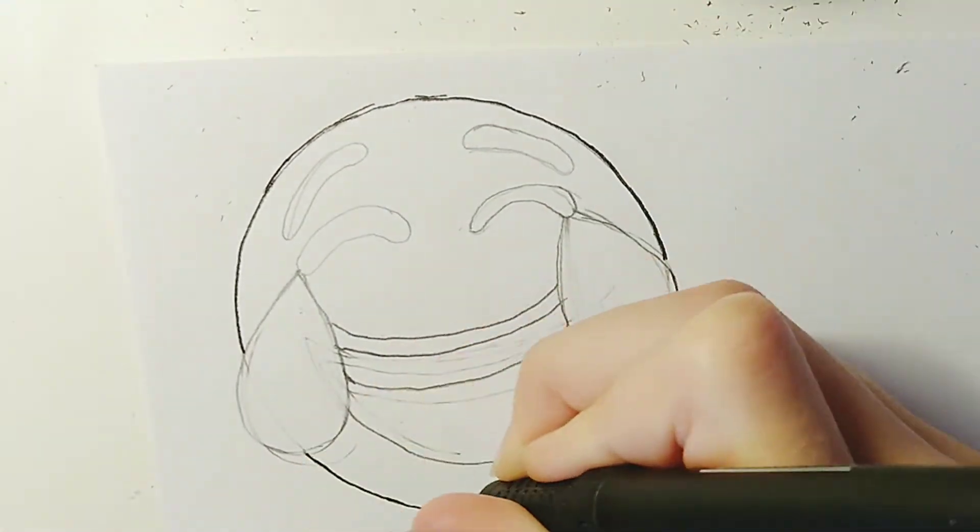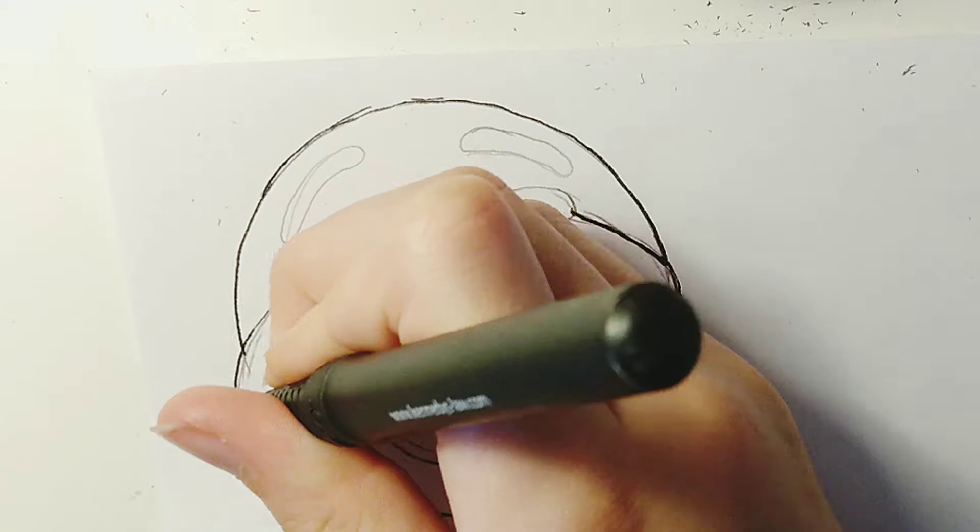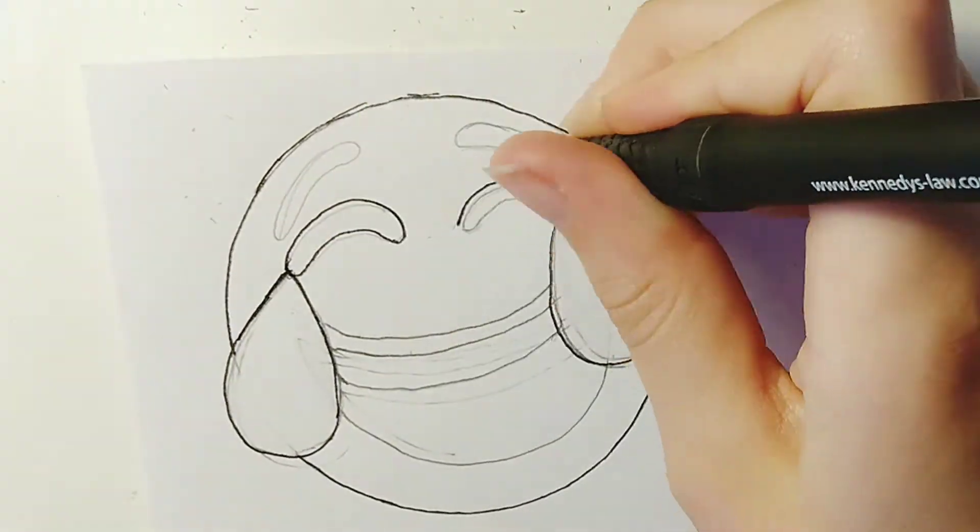And then I'm outlining it in black pen so I can choose which lines I want and rub out the other lines.